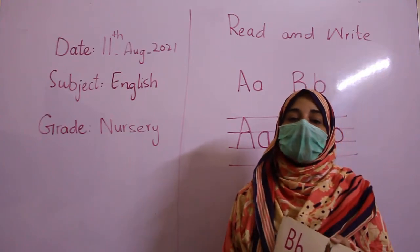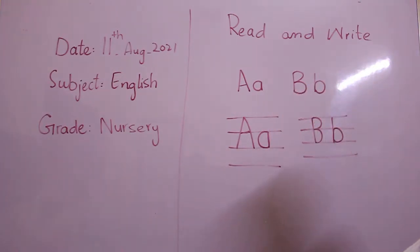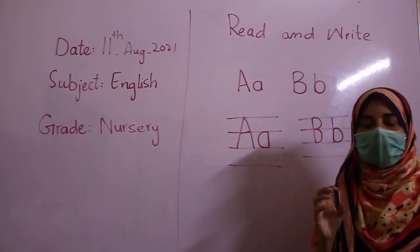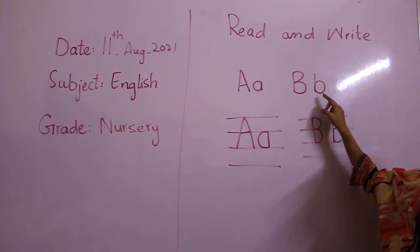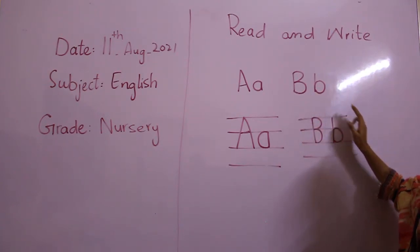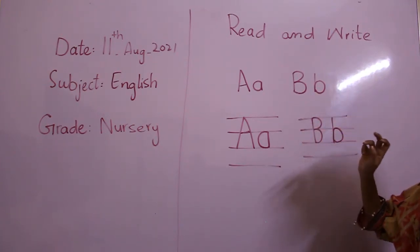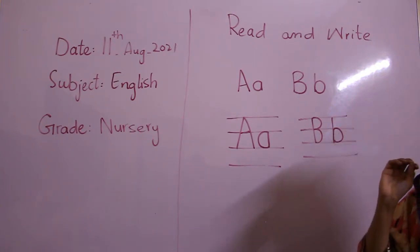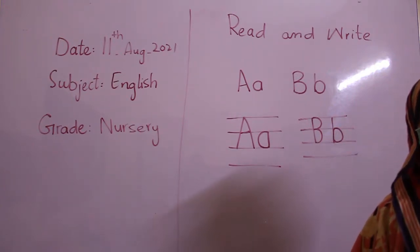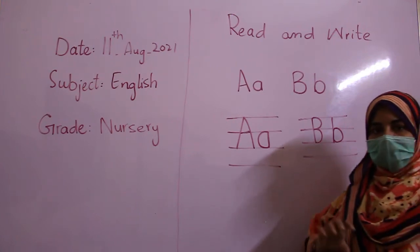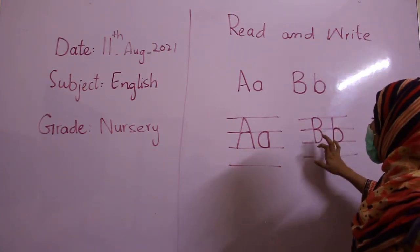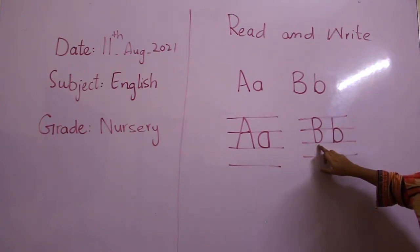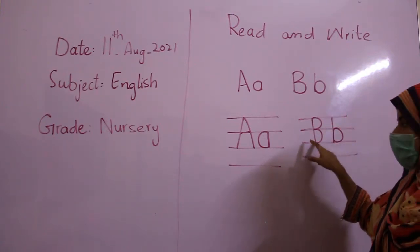Hand and parrots are called birds. Bird — the beginning sound is B. We write B in three lines. Here are four lines; for writing English we use four lines. We use the formation to write in four lines. So here is the four line. We write B in three lines.